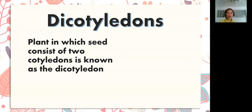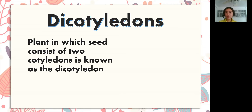The next one is dicotyledons. Dicotyledons. Again: dicotyledons. What is dicotyledons? A plant in which the seed consists of two cotyledons is known as a dicotyledon. Two cotyledons is known as dicotyledon.